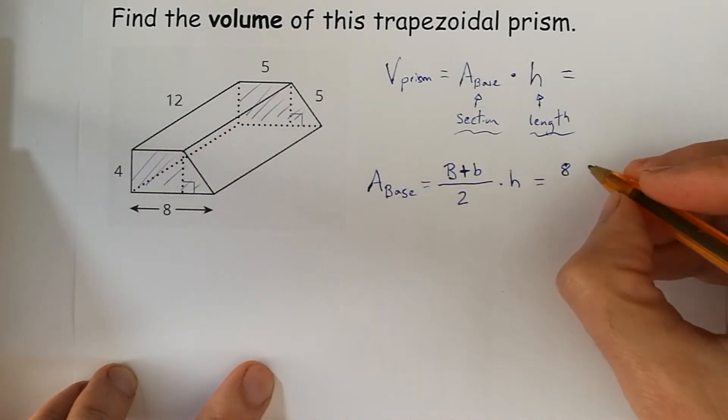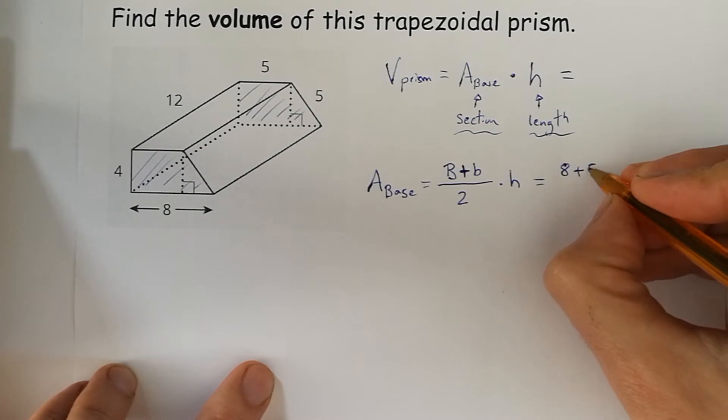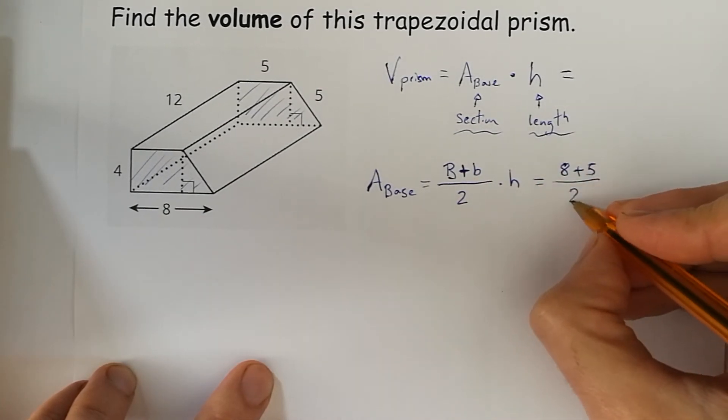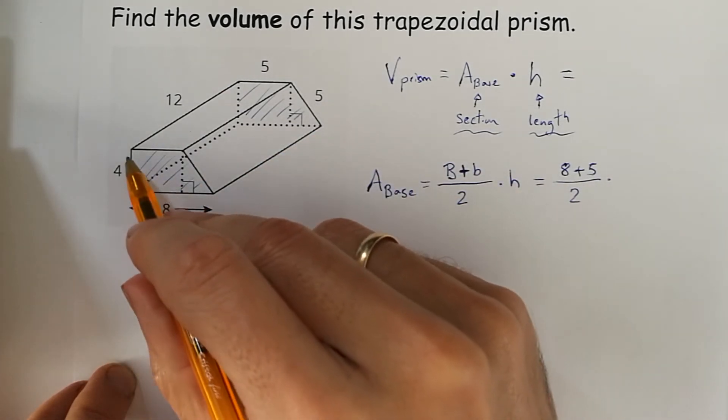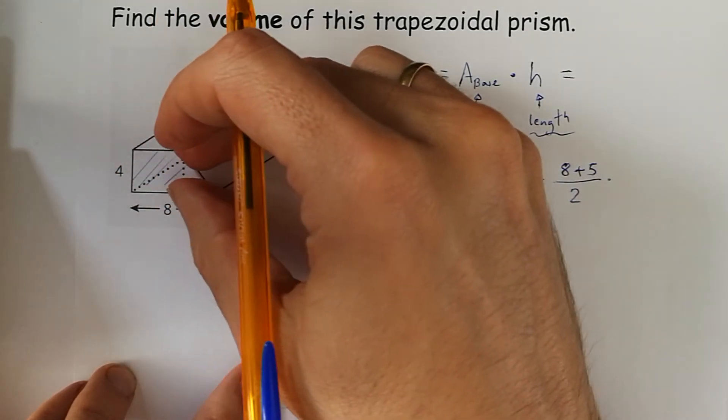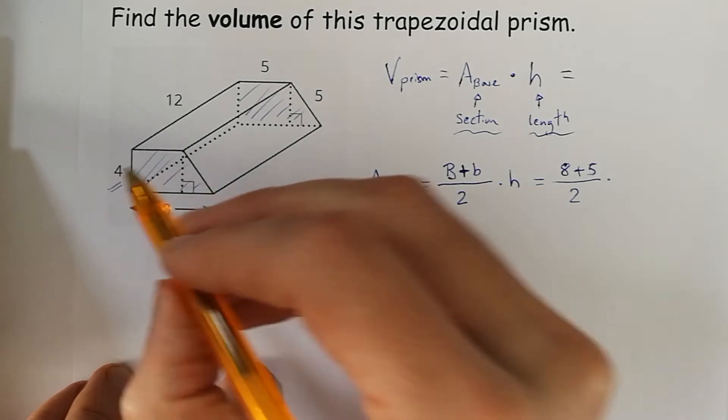the one on the top is 5 over 2, and the height of this trapezium is the same one as the height written here, which is 4.